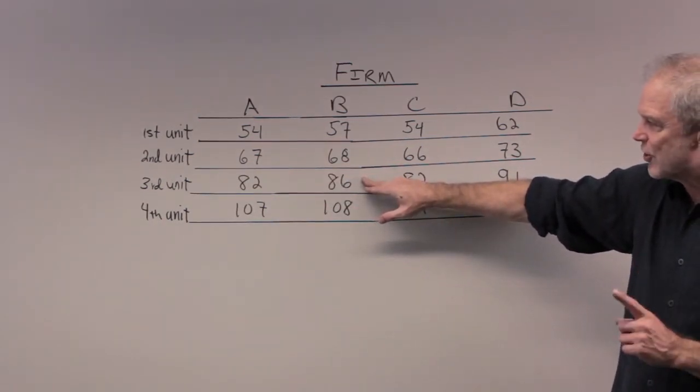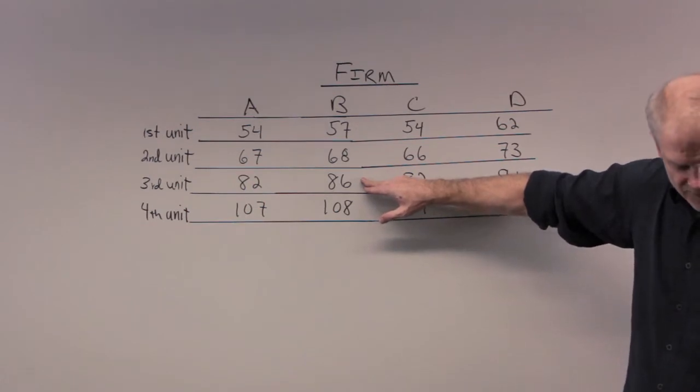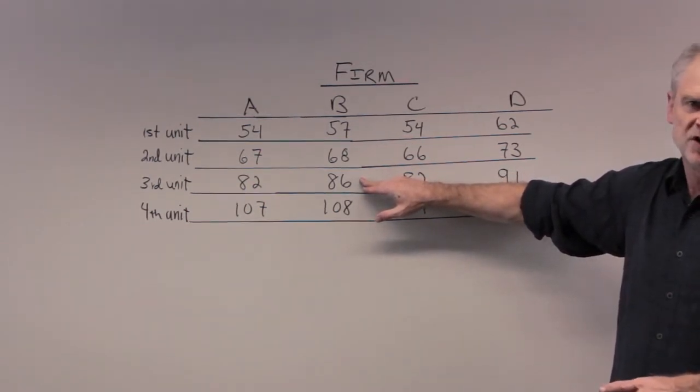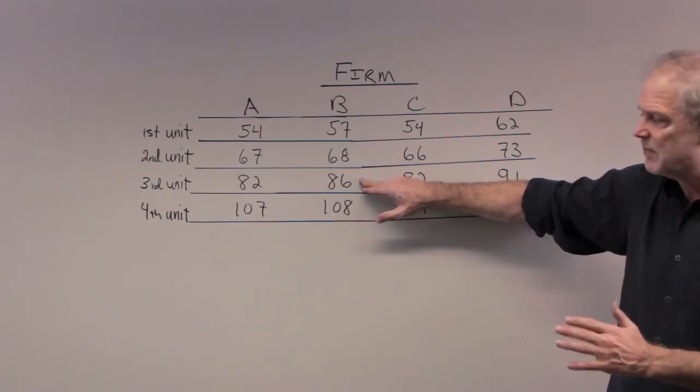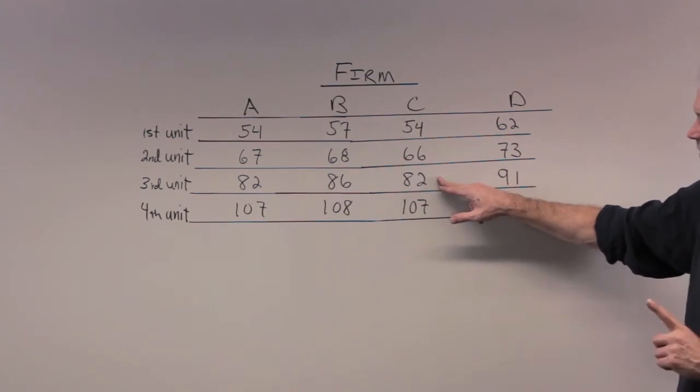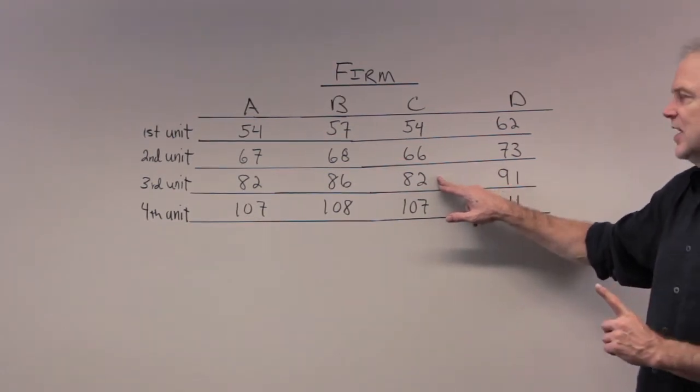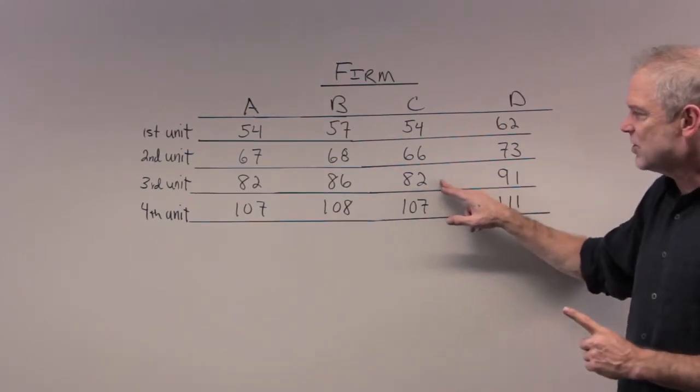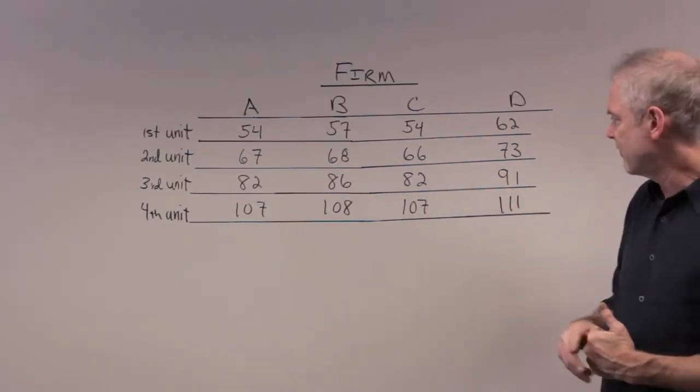So, firm B on its third unit of pollution will say, at $84, I'll pay the government fine and just put this pollution into the river because it's cheaper for me to pay the government fine than it is for me to remove it myself. Firm C, though, they will remove it. They'll get rid of this third unit of pollution because at $82 for them to abate it, it's cheaper than paying the government $84.